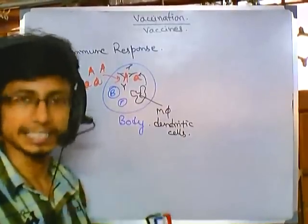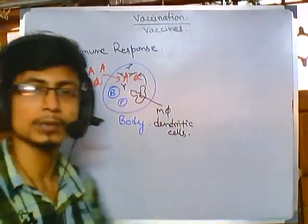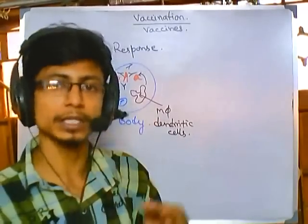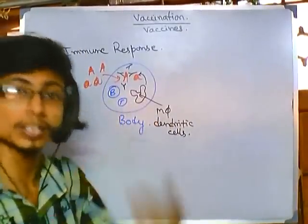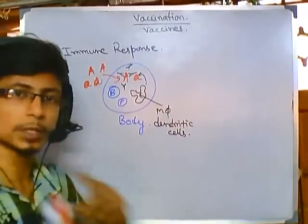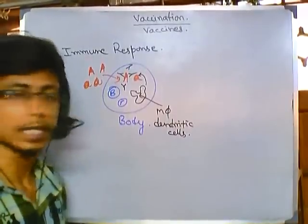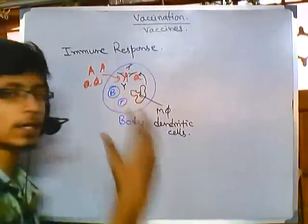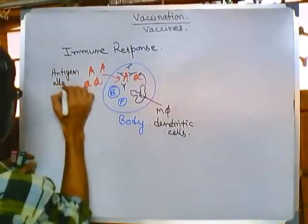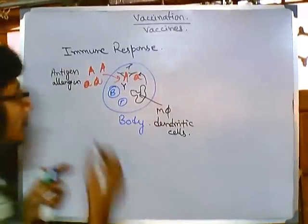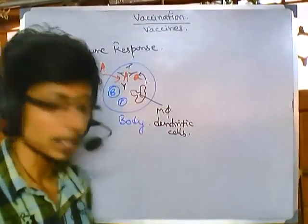This is the basic way immune cells fight against infection. Whatever infection we discuss — caused by bacteria or virus — the proteins they secrete are toxic, foreign, and dangerous for our cells. All these things are antigens or allergens which trigger our immune system. Allergens can also trigger immune response, which is why allergies happen. That's how immune response takes place inside our body.